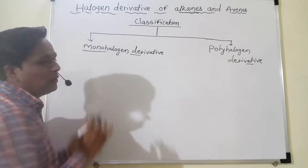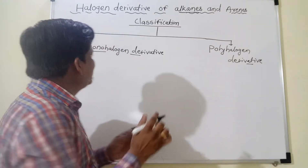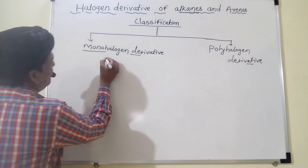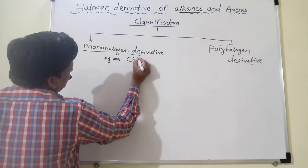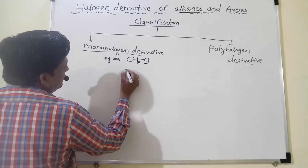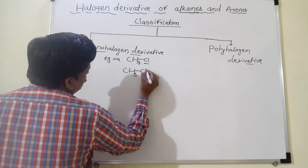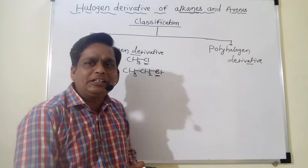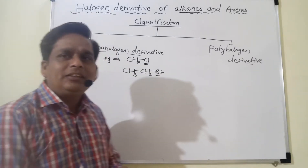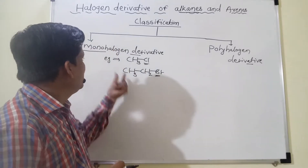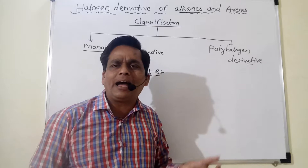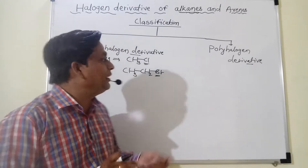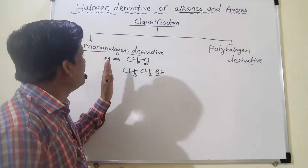First of all, what is meant by monohalogen derivatives? Mono means single — that means there will be a single halogen atom. For example, CH3Cl (methyl chloride) or CH3CH2Br (ethyl bromide). These contain only a single halogen group, that's why they are called monohalogen derivatives. The monohalogen derivative is one in which one hydrogen atom is substituted by one halogen group.